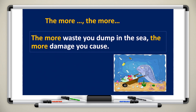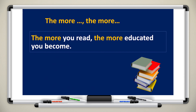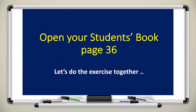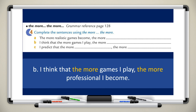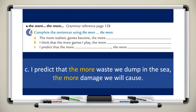Another example: 'The more you read, the more educated you become.' The first part of the sentence matches the second one. Now let's do the exercise from your student's book, page 36. A: 'The more realistic games become, the more addicted people become.' B: 'I think that the more games I play, the more professional I become.' C: 'I predict that the more waste we dump in the sea, the more damage we will cause.' Note that 'will cause' is used because the sentence begins with 'I predict', indicating a future prediction.